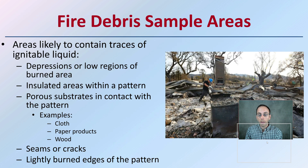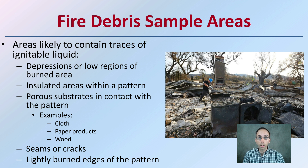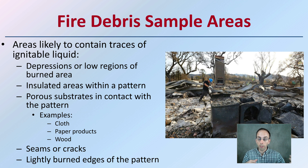First, we want to look at what areas we would want to sample. We want to look at areas likely to contain traces of ignitable liquid, because this can help provide valuable information about what may have started or continued that fire. Areas to look for include low regions and burn areas, depressions, insulated areas within a pattern, and porous substances in contact with the pattern — such as articles of clothing, paper products, or wood in the debris. Also look at seams or cracks in floors or next to walls. Lightly burned edges of the pattern are good because they're not too far charred and not untouched — they give you that fringe area and can tell you a lot about the fire.